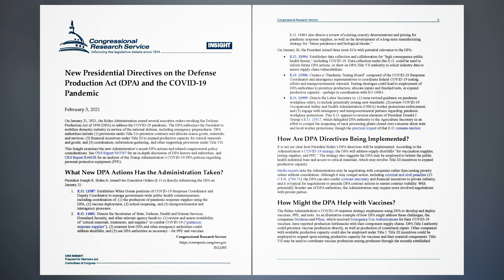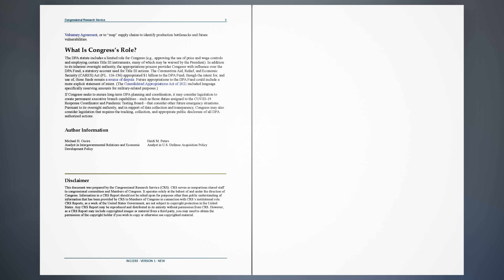How might the DPA help with vaccines? The Biden administration's COVID-19 response strategy emphasizes using DPA to develop and deploy vaccines, PPE, and tests. As an illustrative example, the companies Moderna and Pfizer, which received emergency use authorizations for their COVID-19 vaccines, have reported production bottlenecks with their component supply chains. DPA Title I authority could prioritize vaccine production directly, as well as production of constituent inputs. Other companies with available production capacity could also be employed under Title I. Title III incentives could be employed to expand upon existing productive capacity for vaccines and their material components. Title VII may be used to coordinate vaccine production among producers through a voluntary agreement, or to map supply chains to identify production bottlenecks and future vulnerabilities.